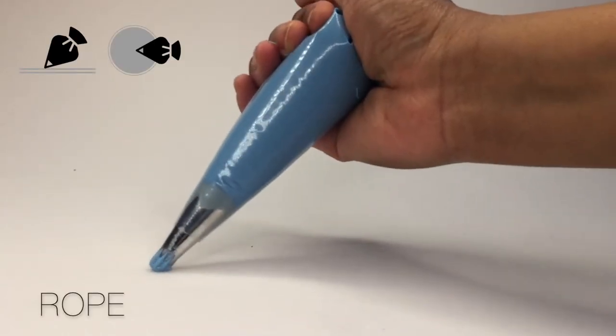Our first technique is the rope. We're going to hold our hand at a 45 degree angle facing the three o'clock position, so we're going to start on the left and move to the right. Now if you're left handed, you are going to hold your bag at a nine o'clock position and start on the right and move to the left.